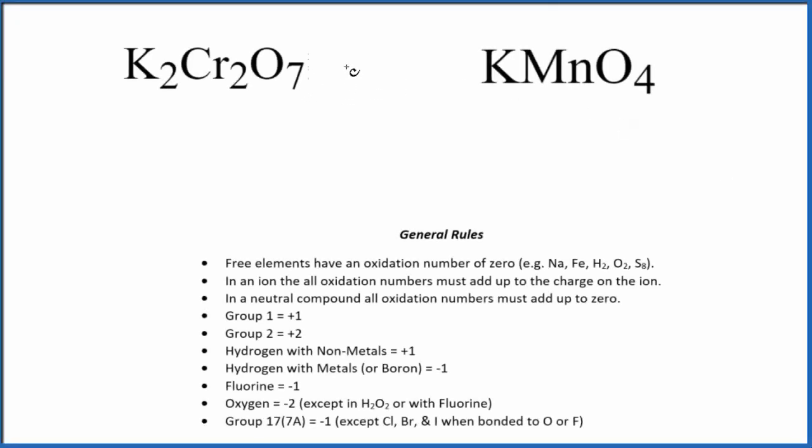In this video, we're going to find the oxidation numbers for each element here in K2Cr2O7, potassium dichromate, and then KMnO4, potassium permanganate. So let's do the potassium dichromate first.